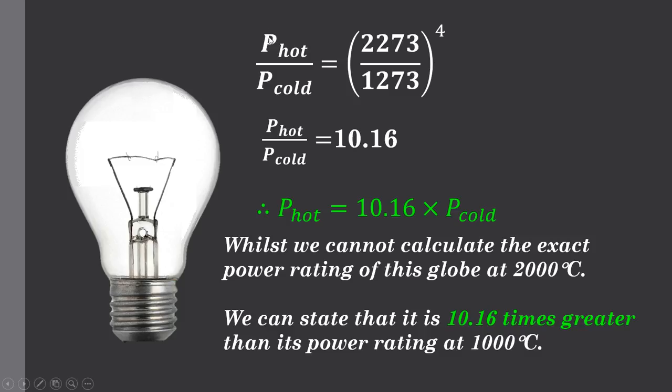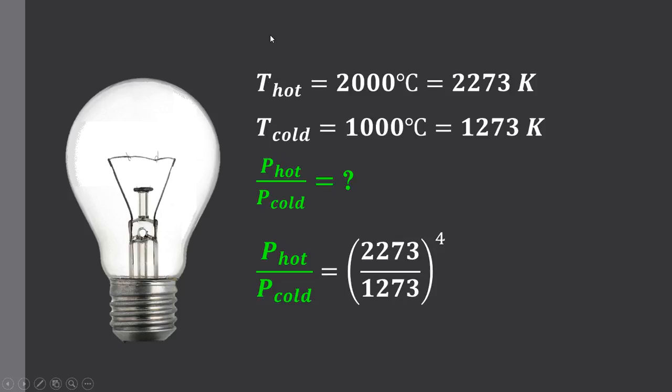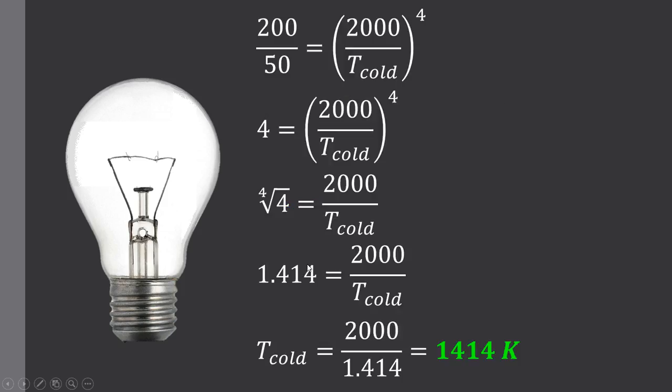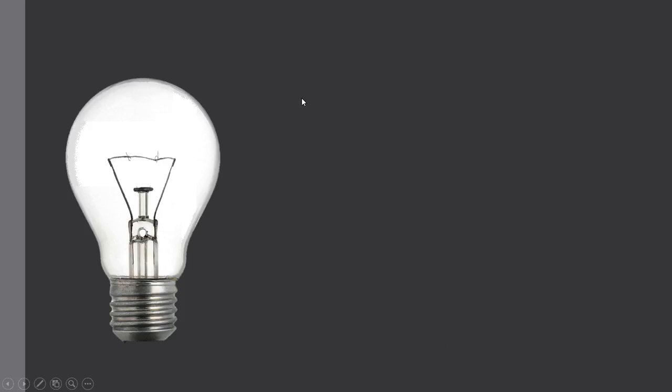I hope this video has clarified what can be for many students of VCE units 1 quite a complex problem. Simply using this equation of hot power, cold power ratio compared to hot temp, cold temp to the power of 4, it enables us to either find a hot power, cold power, hot temperature or cold temperature of a given light globe. Or indeed the ratio of hot to cold. Study hard and do the best you can. Thanks for watching.